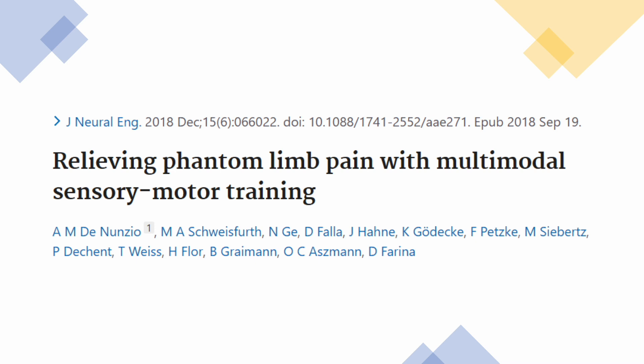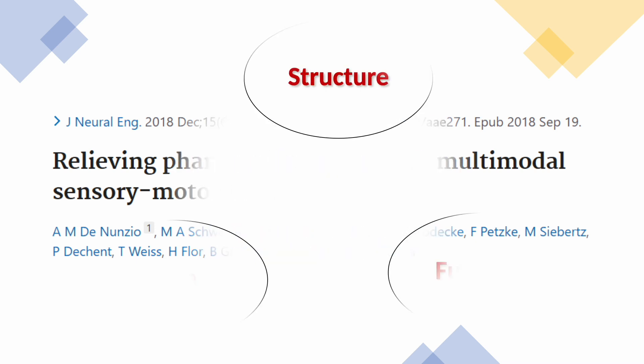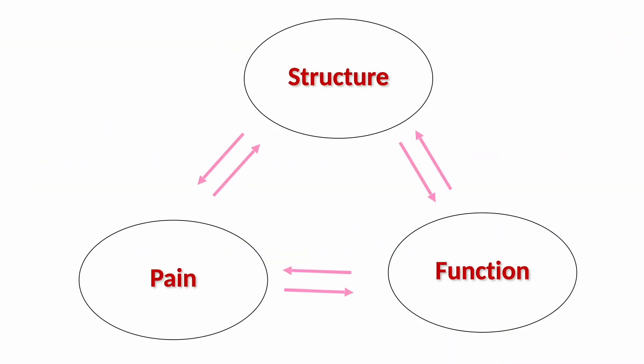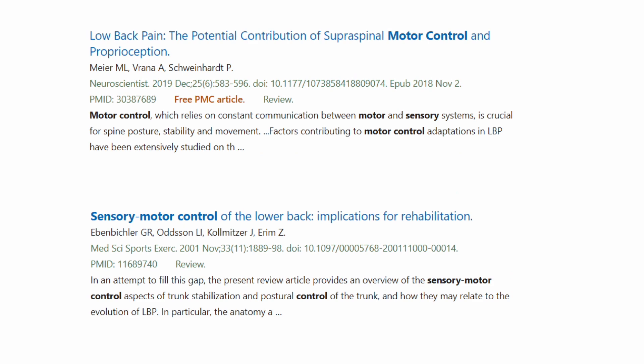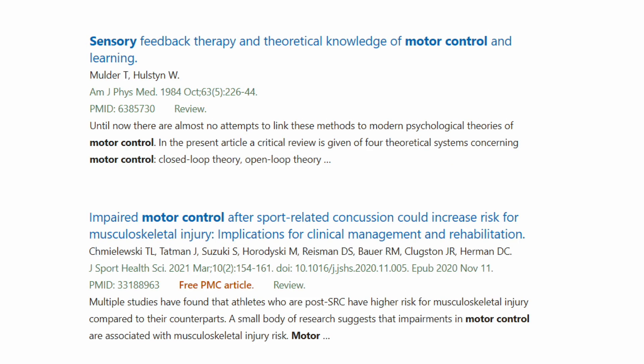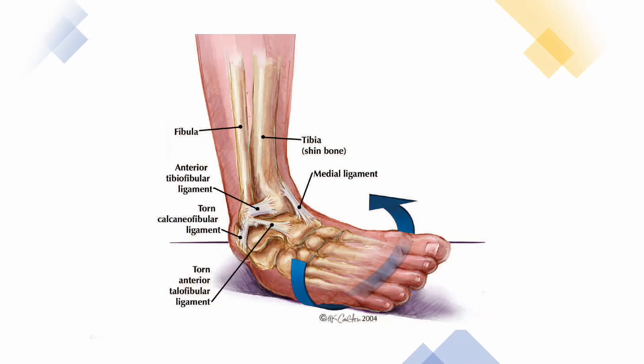Research results revealed a substantial reduction in phantom limb pain intensity obtained with a sensorimotor training protocol. Here is a diagram showing the relation between structure, function, and pain — each part affects the other systems and the entire system. I don't know much about physiotherapy or sensorimotor control training in depth, but I do understand how essential it is for chronic pain management. Here is the message: I want to apply the sensorimotor system to ankle sprain.